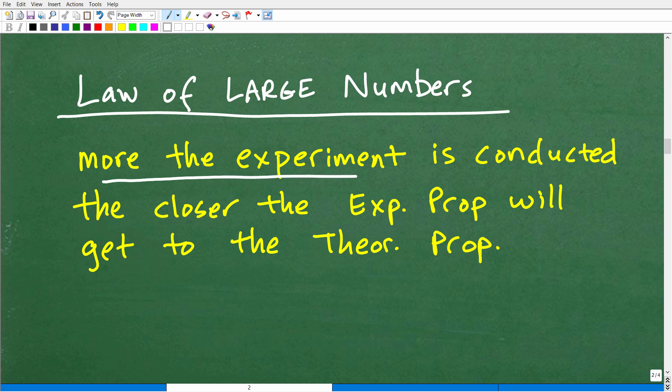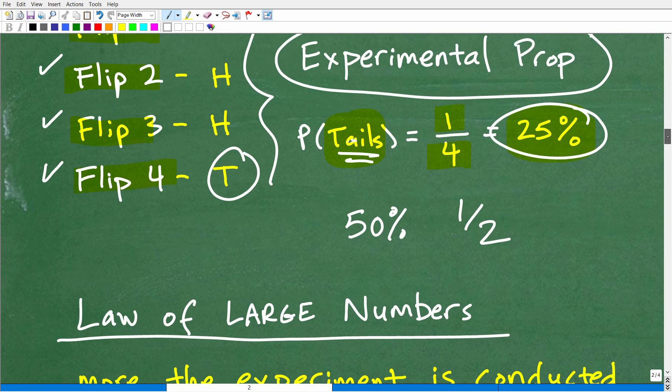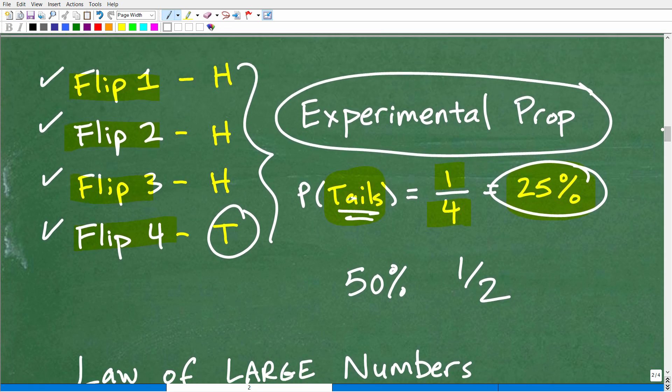And I'm just going to give you a really informal way to think about this. But effectively, it says this. The more the experiment is conducted, the closer the experimental probability will get to the theoretical probability. So what does that mean? Well, let's go back up here to our little experiment. We only did four flips. What happens if I do 40 flips? I did 40 experiments or 400?